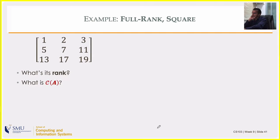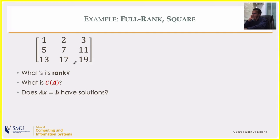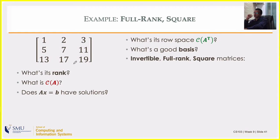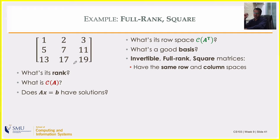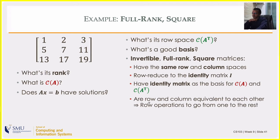For a 3×3 matrix of all prime numbers with rank three: the column space is all of ℝ³, the row space is all of ℝ³, and Ax = b has a unique solution for any b (since the matrix is invertible — unique solution is A⁻¹b). A good basis for both the row space and column space is the identity matrix. All invertible matrices are full rank, so they have the entire input and output spaces as their row and column spaces, and they all row-reduce to the identity via Gauss-Jordan.